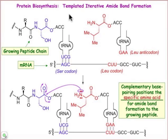The topic of this webcast is protein biosynthesis, which is a remarkable example of recognition and reactivity. Protein biosynthesis in a nutshell is templated, meaning that there's going to be a messenger RNA whose sequence was derived from DNA and whose sequence codes for the particular amino acid sequence in the final protein. It's iterative, meaning that the process is cyclical and repeats itself over and over again. We're going to show just one cycle of this iterative process in this webcast.